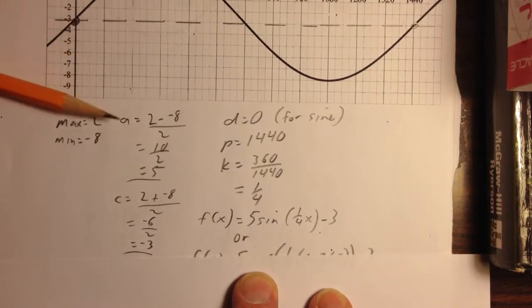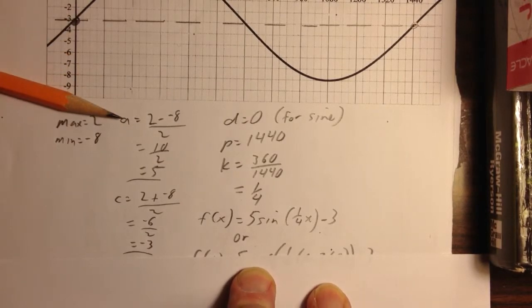So my a value is going to be max minus min over 2, which works out to be 5. My c value, my axis of symmetry works out to be max plus min divided by 2, which works out to be negative 3.